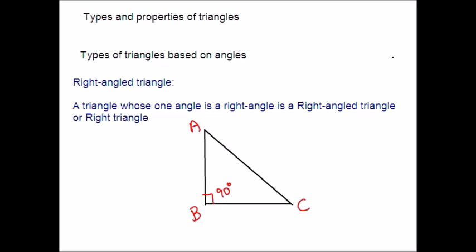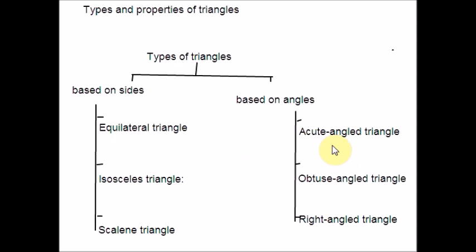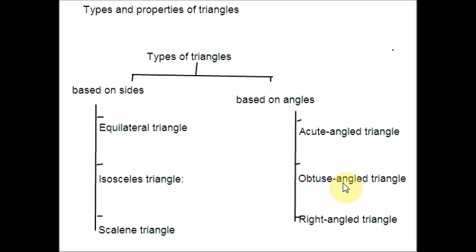These are the six types of triangle based on sides and based on angles — let me draw that as a chart. Based on sides: equilateral means all sides equal; isosceles means only two sides equal; scalene means all three sides different. Based on angles: acute angle means all three angles lesser than 90°; obtuse angle means one angle greater than 90°; right angle triangle means one angle is exactly 90°.